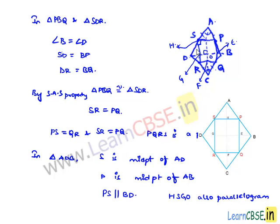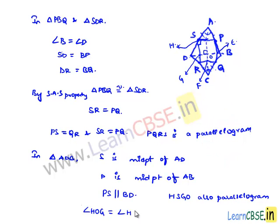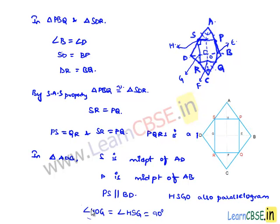As PS is parallel to BD, we can say that H, S, G, O forms a parallelogram. As H, S, G, O forms a parallelogram, we can say that in a parallelogram opposite angles are equal. Therefore, angle HOG is equal to angle HSG, which is equal to 90 degrees. This is because angle HOG equals 90 degrees since in a rhombus the diagonals bisect perpendicularly. So we can say angle S is equal to 90 degrees.